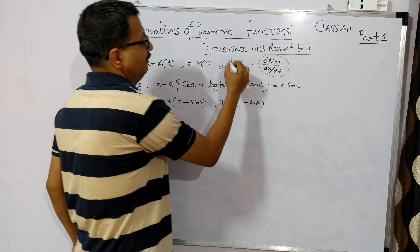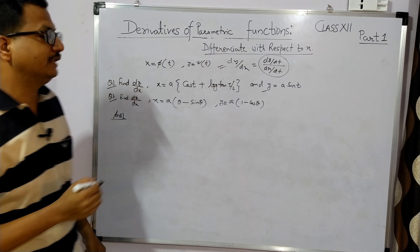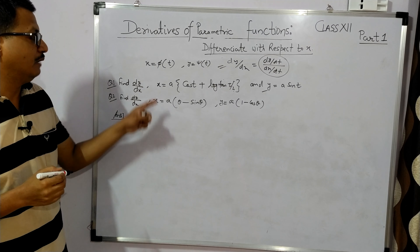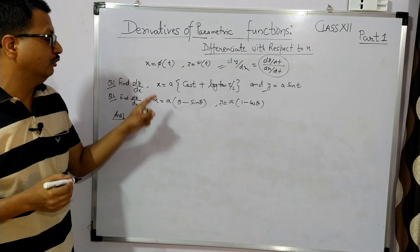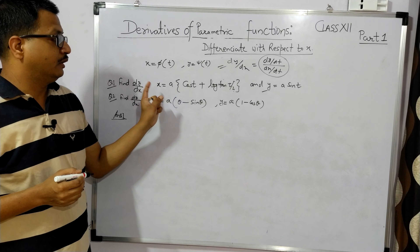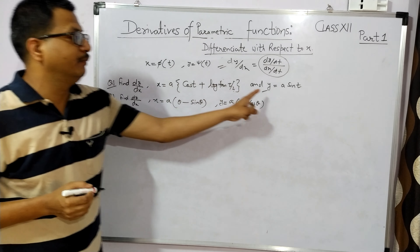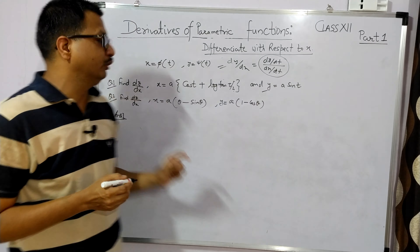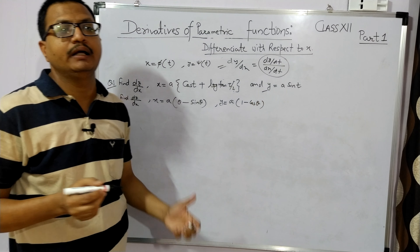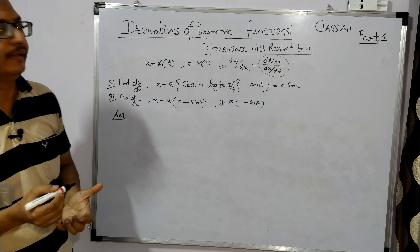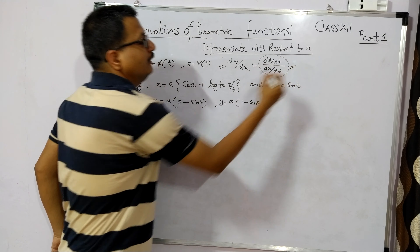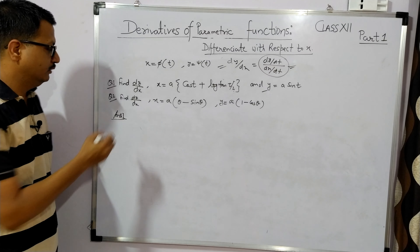इसको जब हम solve करेंगे तो हमारा dy/dx आएगा। यहाँ पे दो equations होंगी और x का जो parameter है वो t है, यहाँ पर भी t है। तो हम लोग dx/dt निकालेंगे, dy/dt निकालेंगे और दोनों को divide कर देंगे — इस तरह से हमारा dy/dx आएगा।